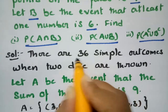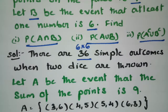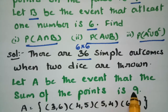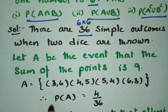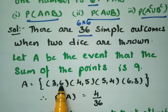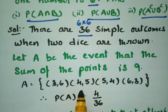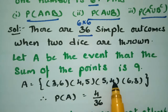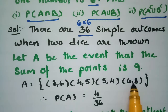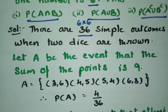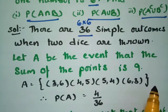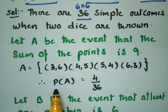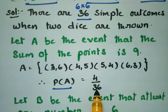Since there are two dice, that is 6 into 6, we get 36 simple outcomes. Let A be the event that the sum of the points is 9. The combinations are: (3,6), 3+6=9; (4,5), 4+5=9; (5,4), 5+4=9; (6,3), 6+3=9. So there are four possibilities of getting a sum of 9.